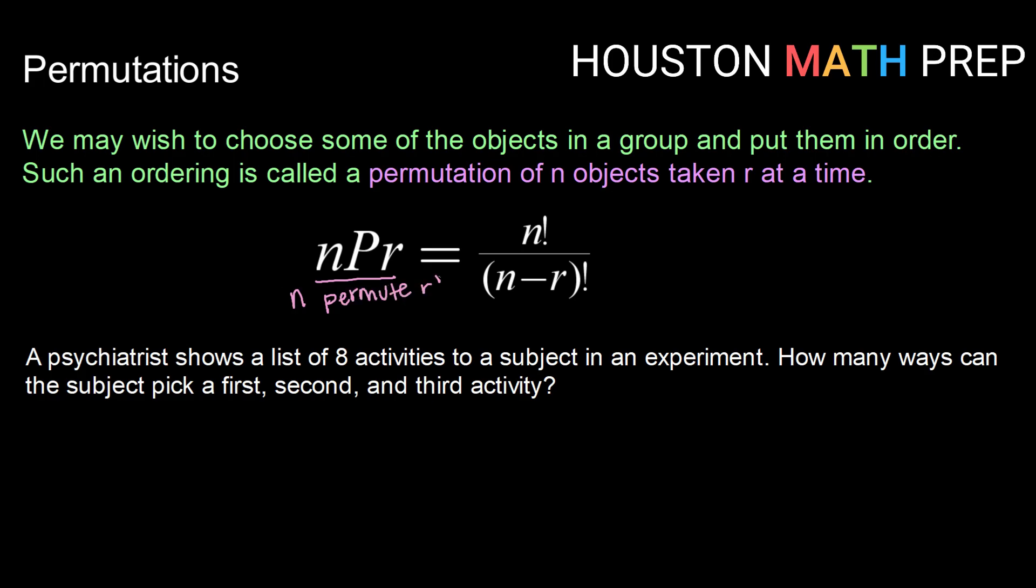So that's how you would read that. n permute r. Or take r, take groups of r out of n objects and put them in a particular order. So the way that we calculate that is we take n factorial and divide by n minus r factorial. That will give us the number of ways we can order groups of r out of n at a time.